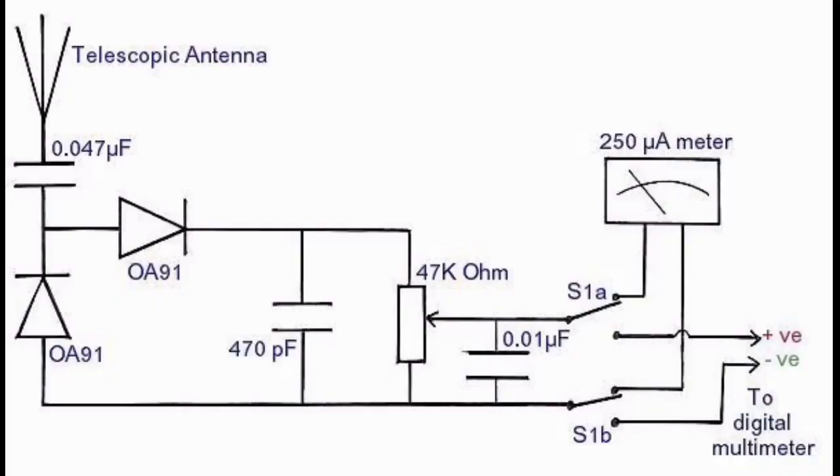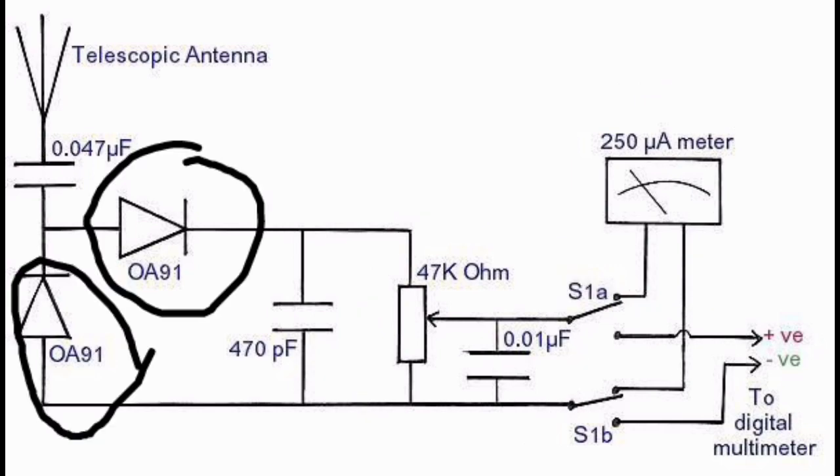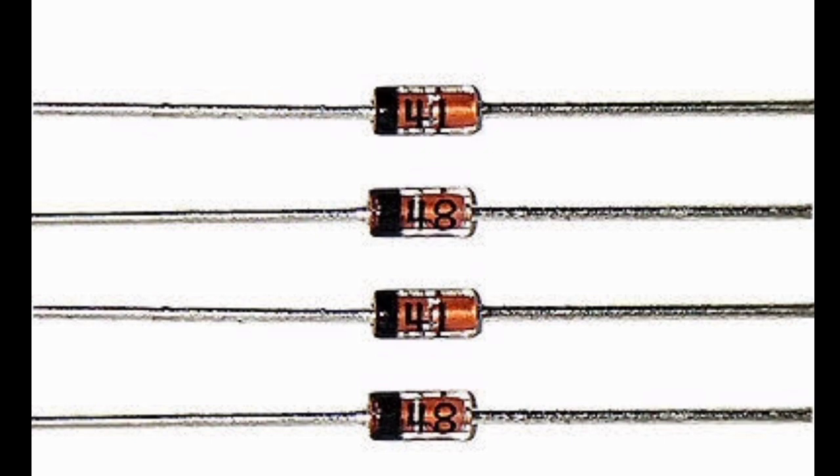Instead of using OA91 diodes, I used 1N4148 diodes, and the rest of the circuitry is the same. Here I have opened the multimeter, and this circuit here is the part which does the actual job of measuring radio frequencies.